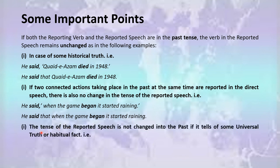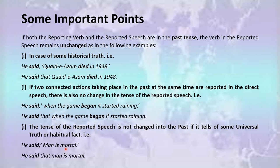The third point: the tense of the reported speech is not changed into the past if it tells of some universal truth or habitual fact. For example: He said, 'Man is mortal.' This is a universal truth, so the reported speech remains the same. The indirect speech is: He said that man is mortal. The tense is not changed, as mentioned in the rule.